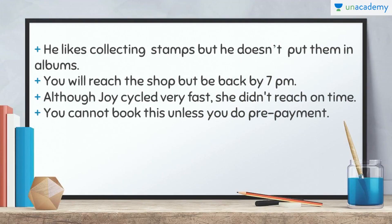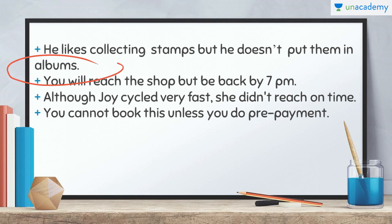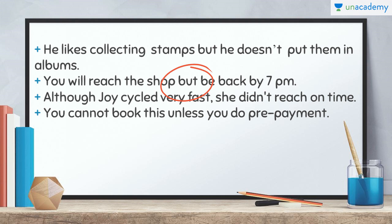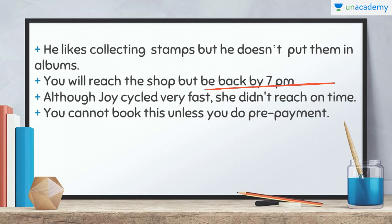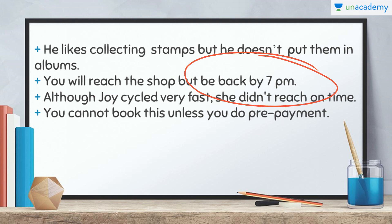Fifth: 'He likes collecting stamps but he doesn't put them in albums.' Two things happening in opposition — when someone collects stamps, that person is supposed to keep them in stamp albums. He likes collecting but the other thing he is doing is totally opposite, so 'but' is used. Sixth: 'You will reach the shop but be back by 7pm.' Here 'but' gives a condition — you will reach the shop, that is for sure, but the condition is you have to be back by 7pm, so we write 'be back by 7pm' directly without 'have to'.